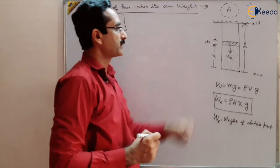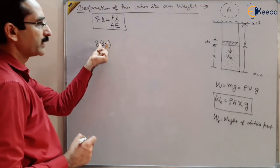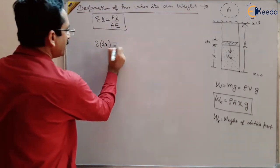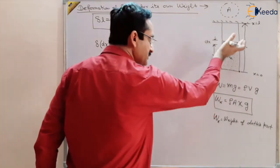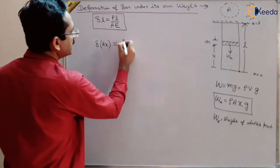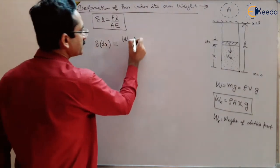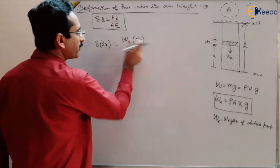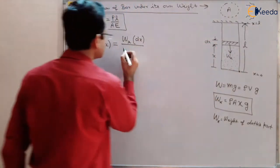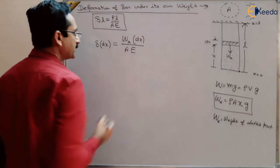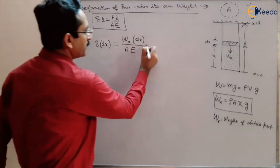Because each part is facing a different weight, we find the deformation in this small element dx first. That deformation equals the force acting on dx — which is wx, the weight of the dotted part pulling from below — times the element length dx, divided by area A and modulus E. So δ(dx) = wx · dx / AE = ρAxg · dx / AE.